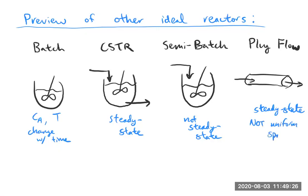Each of these different reactor types are things you would commonly encounter in industrial settings, and they each affect the generalized balance a little differently, forcing you to encounter a slightly different mathematical situation and understand how to treat it.